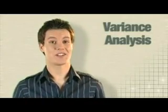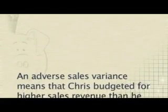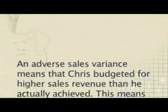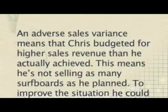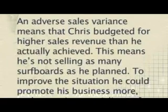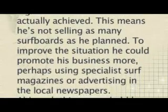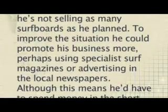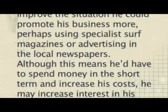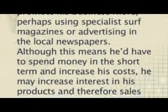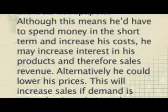You might have written something like this. An adverse sales variance means that Chris budgeted for higher sales revenue than he actually achieved — he's not selling as many surfboards as he planned. To improve the situation, he could promote his business more, perhaps using specialist surf magazines or advertising in local newspapers. Although this means he'd have to spend money in the short term and increase his costs, he may increase interest in his products enough to boost sales and therefore sales revenue.